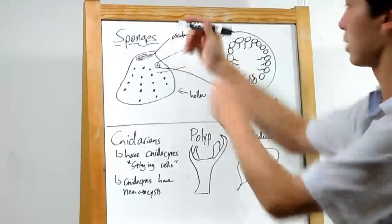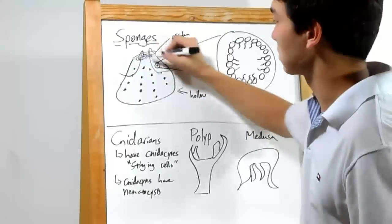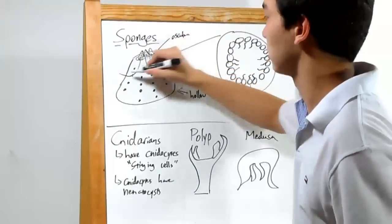And then they'll go out through a big hole in the top called the osculum, since they can't go out through any of these holes, which are all beating water inwards.